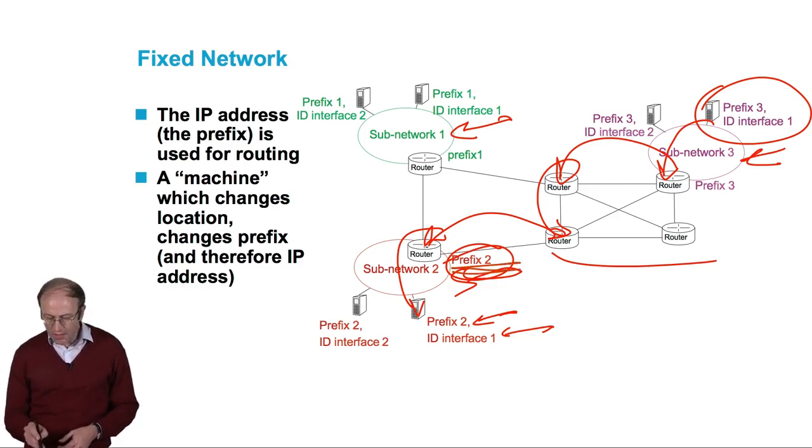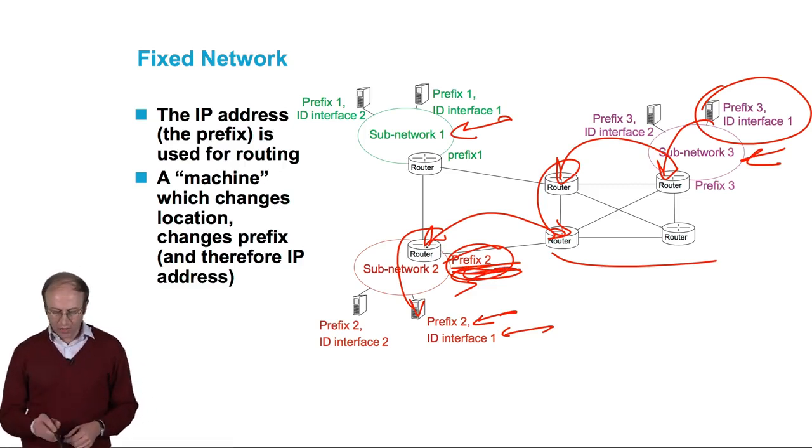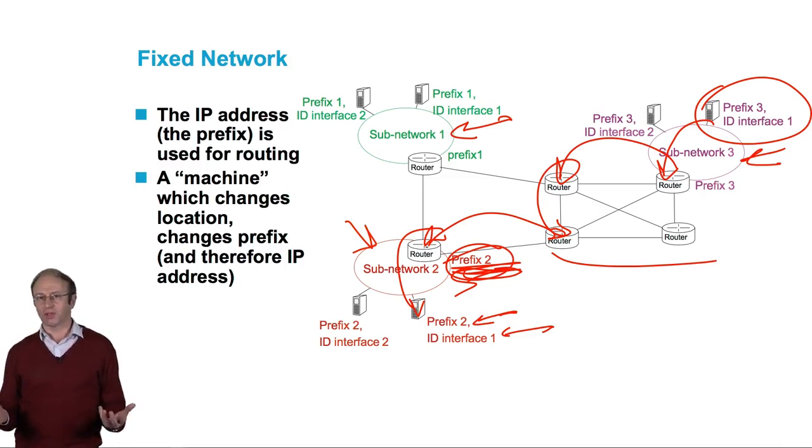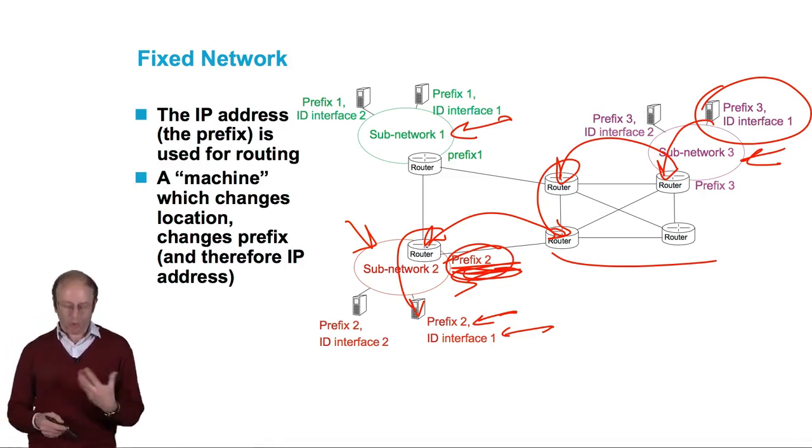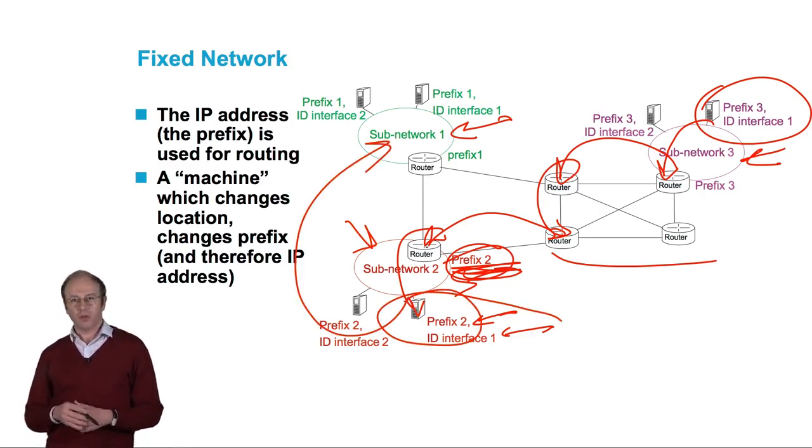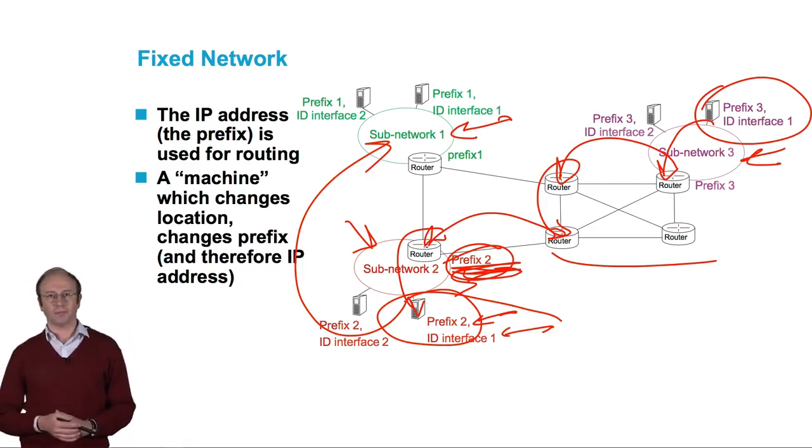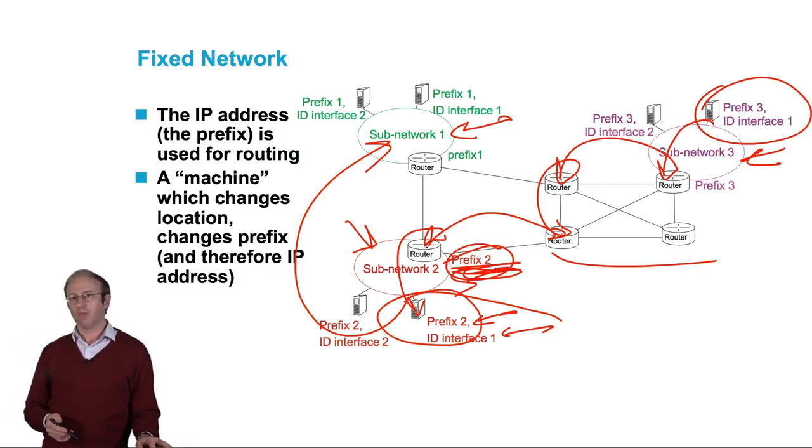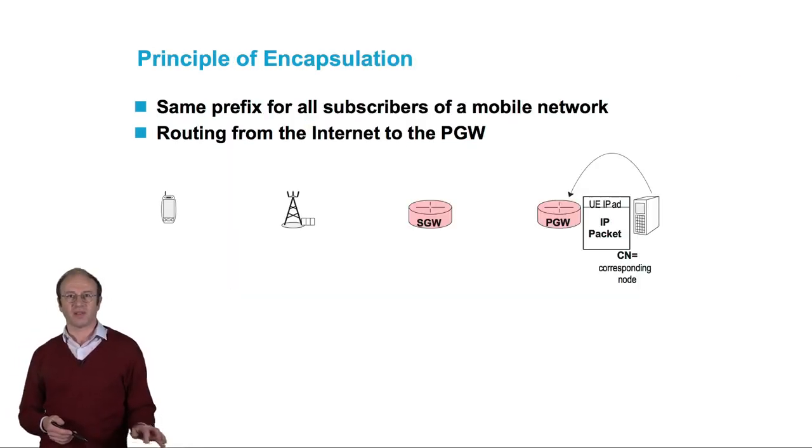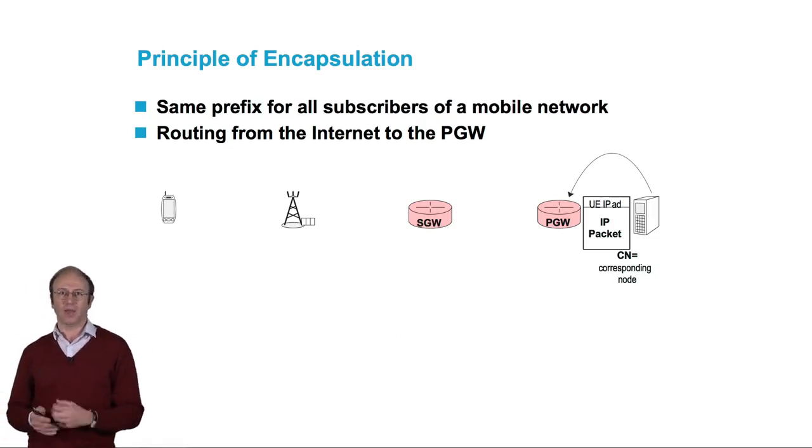In our example, prefix 2 is analyzed to route the packet towards the correct subnetwork. If we consider mobile networks, we have a problem when a machine is moved from one subnetwork, for instance subnetwork 2, to subnetwork 1. The designers of mobile systems, when they standardized 4G networks, decided to associate a prefix to the packet gateway.